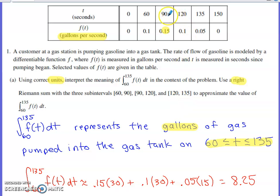The next rectangle spans the t-axis from 90 to 120. The right endpoint's 120. We would use 0.1 as the height of this next rectangle. And then the last rectangle spans the t-axis from 120 to 135, so the width of that would be 15. Right endpoint is 135, which the function value there is 0.05.